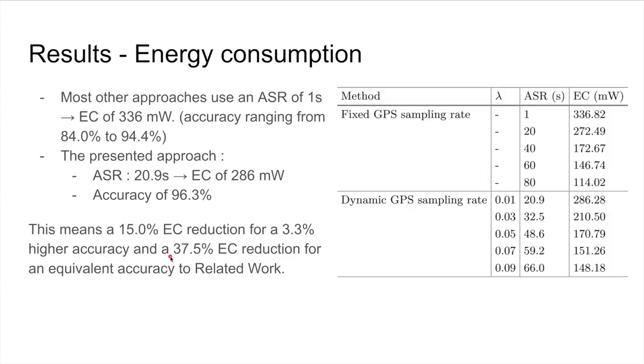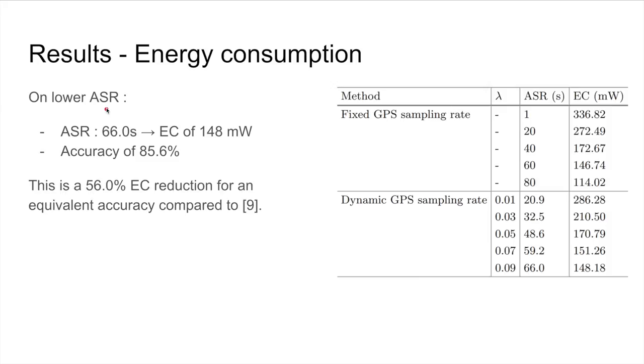It is also worth mentioning that on lower average sample rates, we can maintain an accuracy of 85%, which is a reduction of 56% of energy consumption for an equivalent accuracy compared to one of the related articles.